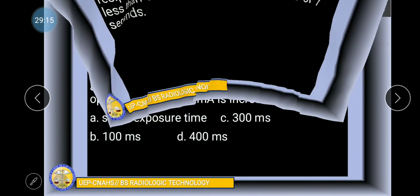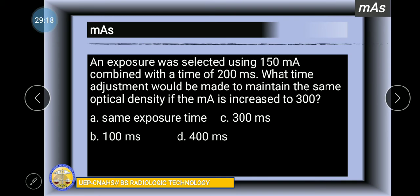The MA time relationship as described by reciprocity law fails with screen exposures of less than 10 milliseconds or more than 6 to 7 seconds. Let's try this exercise again, a simple exercise.